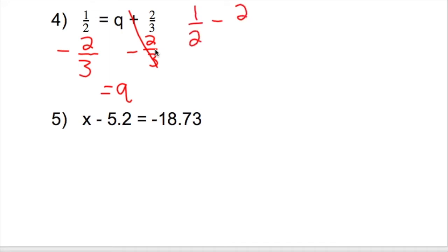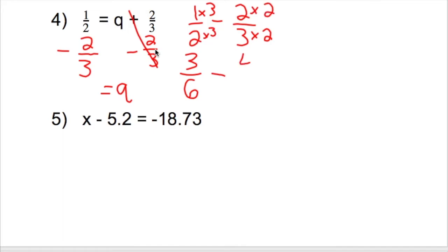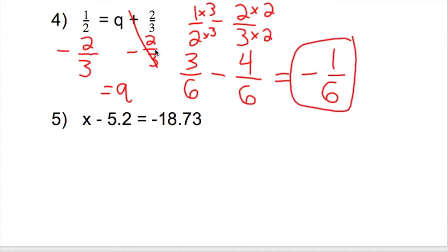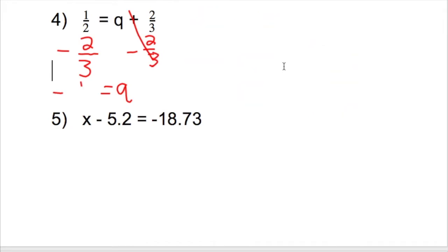To subtract fractions, we need a common denominator. The common denominator of 2 and 3 is 6. For 1 half: 2 times 3 is 6, and 1 times 3 is 3, giving us 3 sixths. For 2 thirds: 3 times 2 is 6, and 2 times 2 is 4, giving us 4 sixths. So we have 3 sixths minus 4 sixths. 3 minus 4 gives negative 1, with denominator 6. So 1 half minus 2 thirds is negative 1 sixth, and q equals negative 1 sixth.